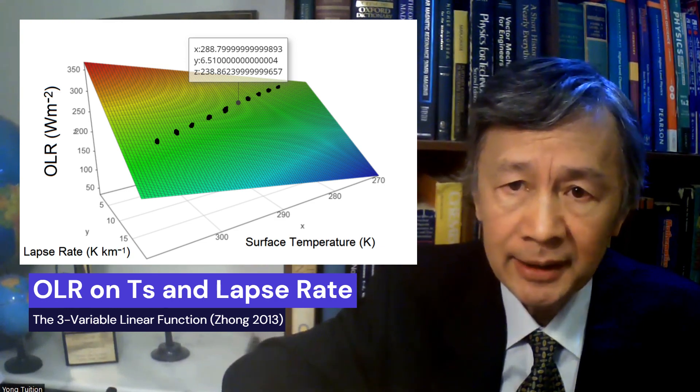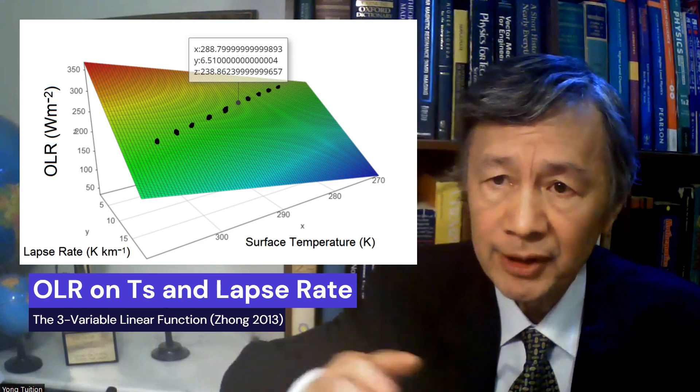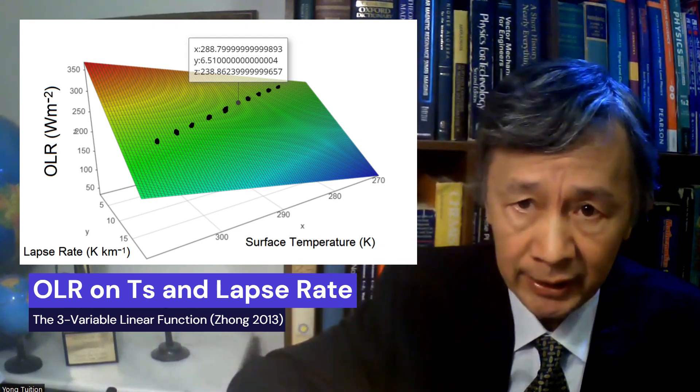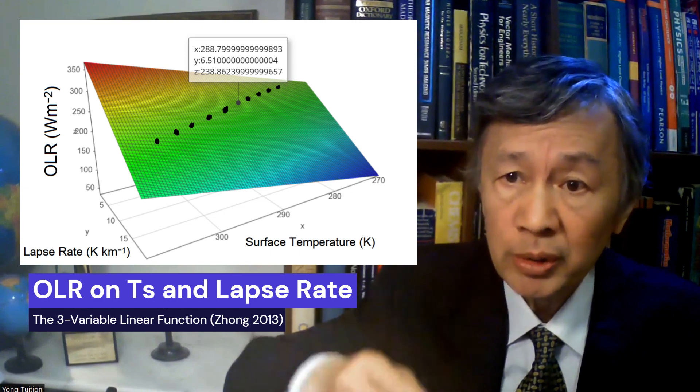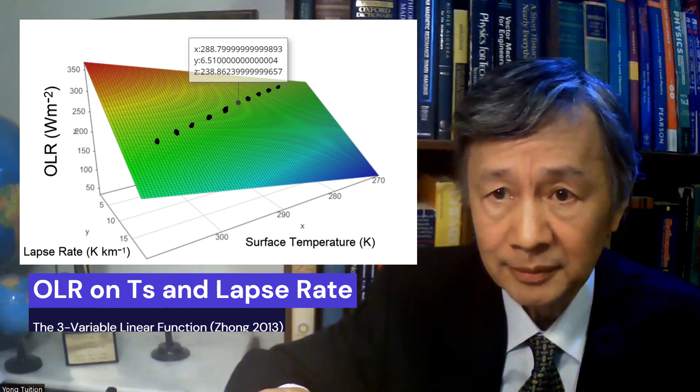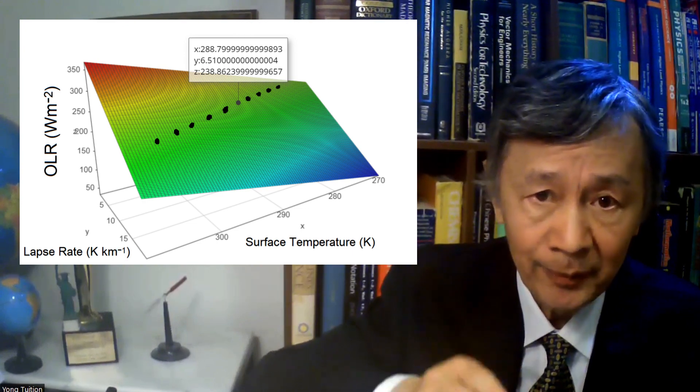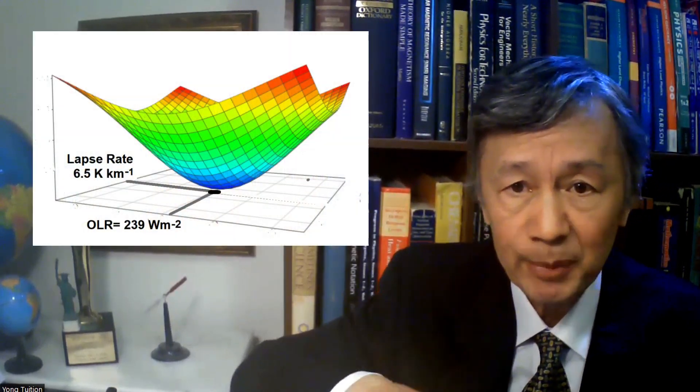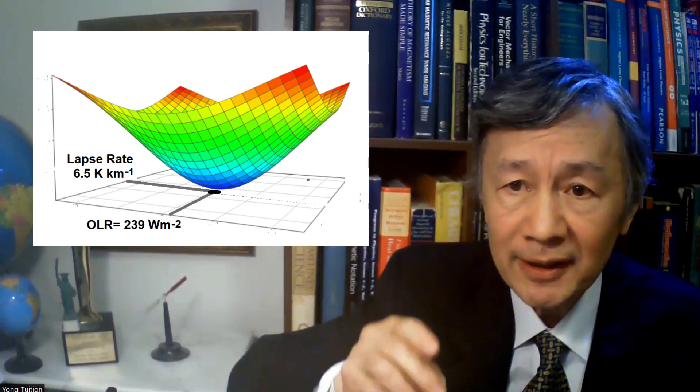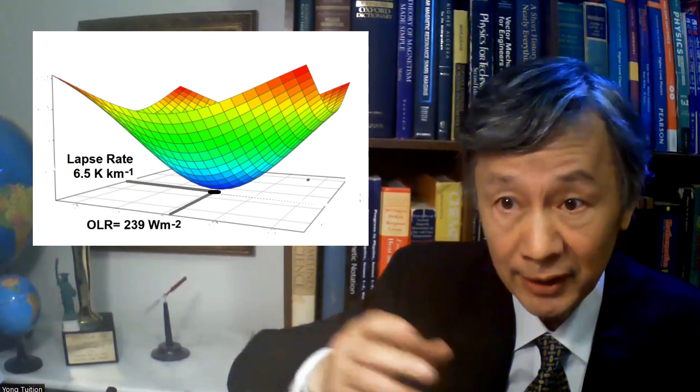On the other hand, different pairs of surface temperature and the lapse rate in the troposphere can be used to achieve that special OLR value. Although the pair, 288 Kelvin and 6.5 K per kilometer, seems the natural selection of the Earth.